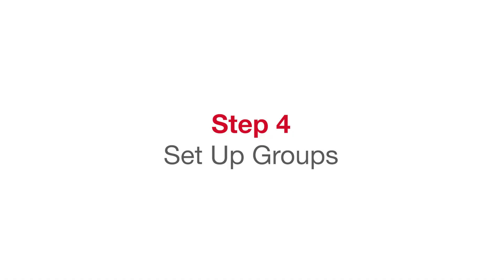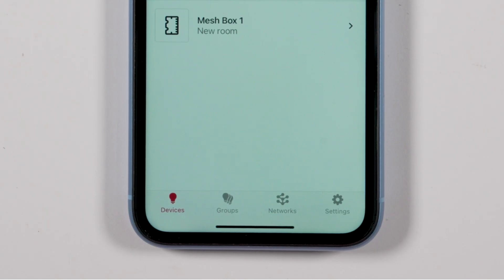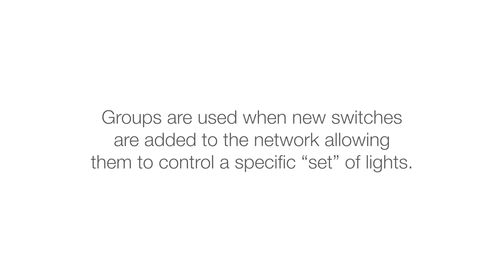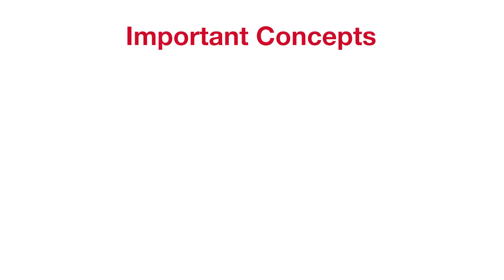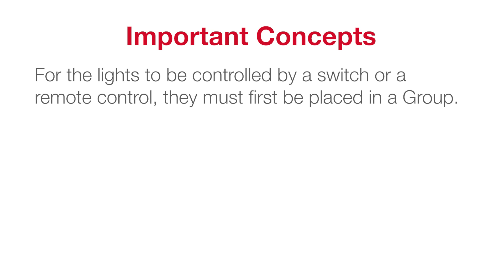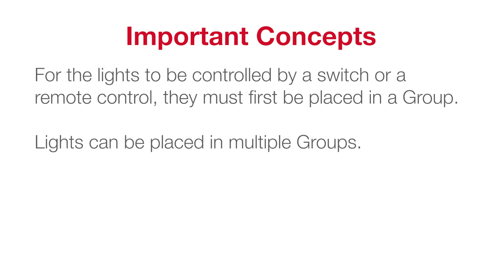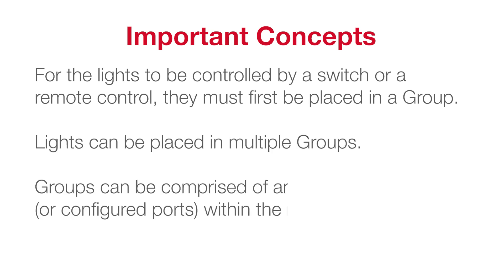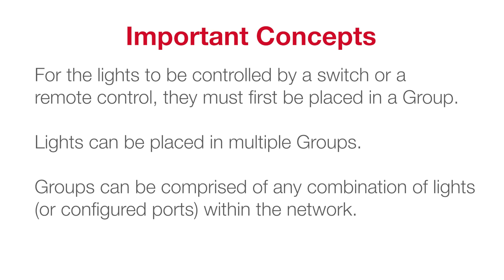Step 4: Set up groups. The next step is to create a group, which is used when new switches are added to the network, allowing them to control a specific set of lights. Important concepts: for lights to be controlled by a switch or remote control, they must first be placed in a group. Lights can be placed in multiple groups, and groups can be comprised of any combination of lights or configured ports within the network.